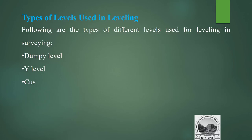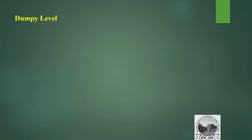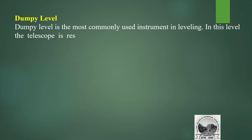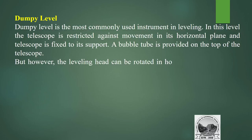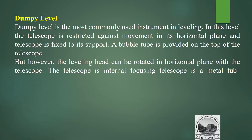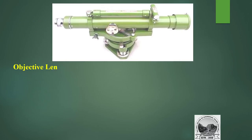Types of levels used in leveling: dumpy level, Y level, crossing level, tilting level, Cook's reversible level, and automatic level. Dumpy level is the most commonly used instrument in leveling. In this level, the telescope is restricted against movement in its horizontal plane and is fixed to its support. A bubble tube is provided on top of the telescope, and the leveling head can be rotated in the horizontal plane. The telescope is an internal focusing telescope, a metal tube containing four main parts: objective lens, negative lens, diaphragm, and eyepiece.